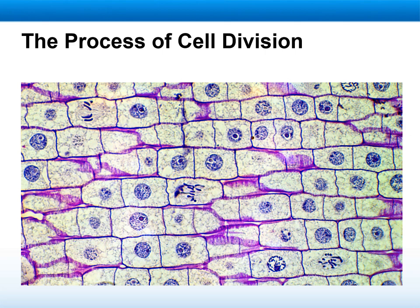Welcome, my dear students, to week six. In this week, we will start talking about the process of cell division. Cell division is the process where the cell goes through meiosis and mitosis, dividing the cell to produce numerous numbers of cells.